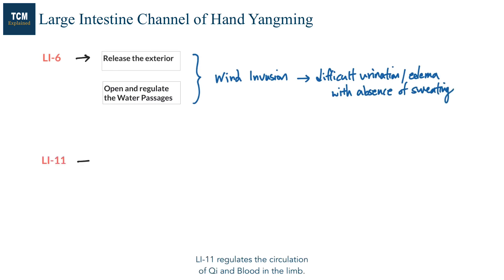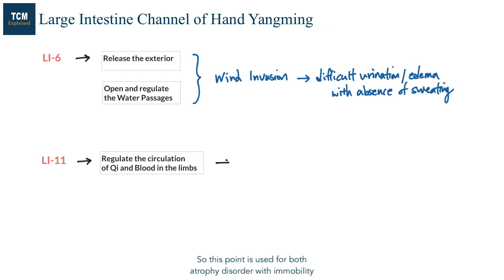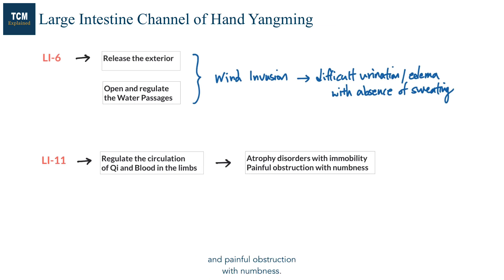LI11 regulates the circulation of Qi and blood in the limb, so this point is used for both atrophy disorder with immobility and painful obstruction with numbness. For these cases, this point is often used together with LI4 and LI15.